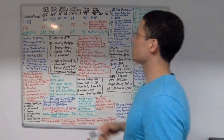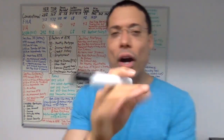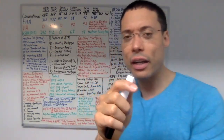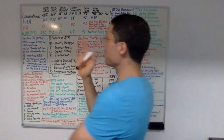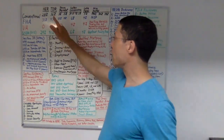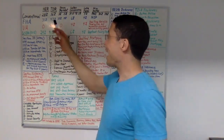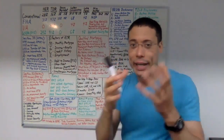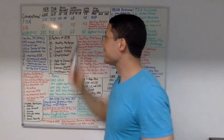Now, FHA — what are some general characteristics of FHA loans? Regarding FHA loans, the maximum housing expense ratio is 31%. The maximum total obligations ratio is 43%.